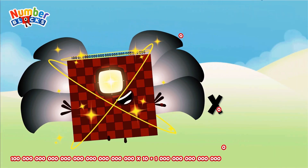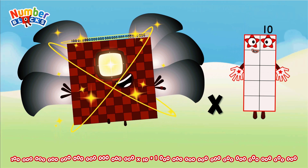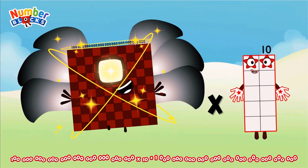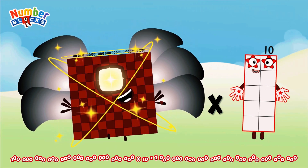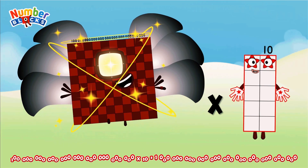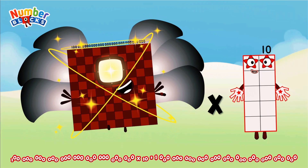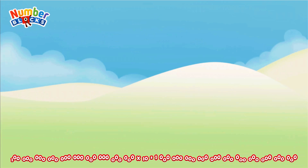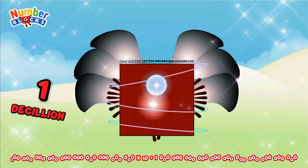100 nonillion multiplied by 10 equals 1 decillion.